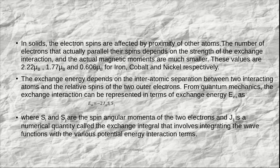The exchange energy depends on the inter-atomic separation between two interacting atoms and the relative spins of the two outer electrons. From quantum mechanics, the exchange interaction can be represented in terms of exchange energy given by the expression: E = −2 J_ij · S_i · S_j. The indices i and j refer to different atoms, where S_i and S_j are the spin angular momenta of the two electrons. The quantity J_ij is a numerical quantity known as the exchange integral, which involves integrating the wave functions with various potential energy interaction terms.